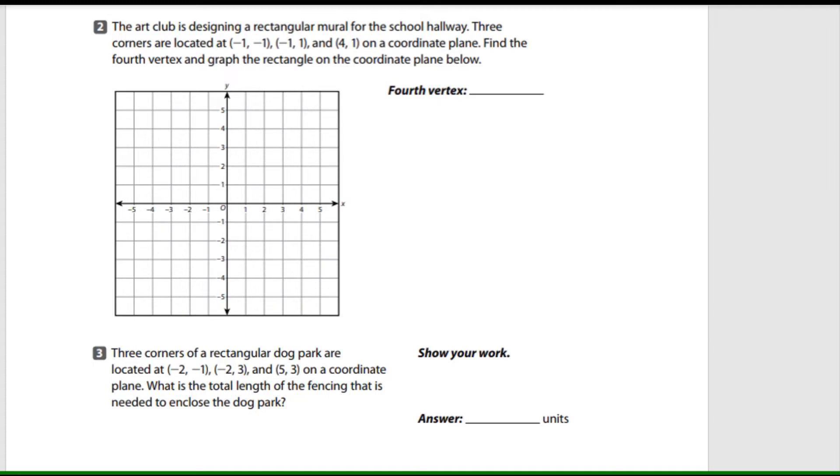Alright, so graph those points first. Go ahead. Okay. So negative one, negative one. Just put a dot, just put it like a little dot right there. And then go to negative one, positive one. And then four, one. It's right there.